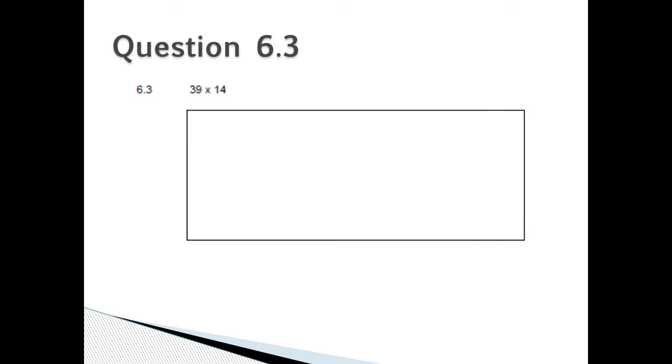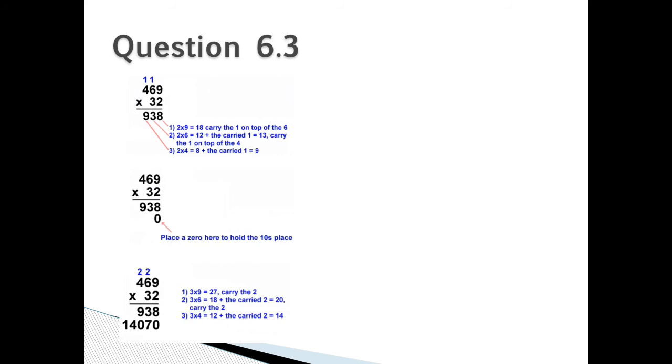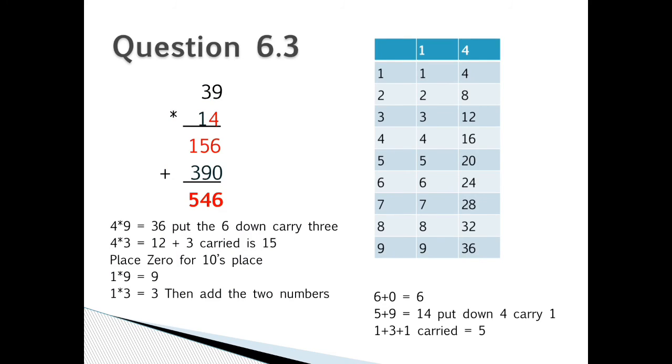Question 6.3: Calculate 39 times 14. Here are a few examples of multiplication. 4 times 9 will be 36. Put down the 6 and carry the 3. 4 times 3 will be 12 plus 3 carried is 15. Place 0 for the tens place. 1 times 9 is equal to 9. 1 times 3 will be 3. Then add the two numbers: 6 plus 0 will give me 6, 5 plus 9 will give me 14. Put down the 4 and carry the 1. 1 plus 3 plus 1 carried is equal to 5, so my answer will be 546.